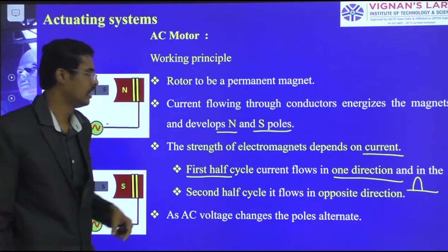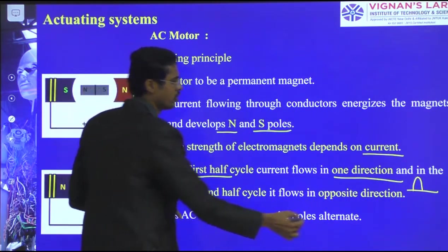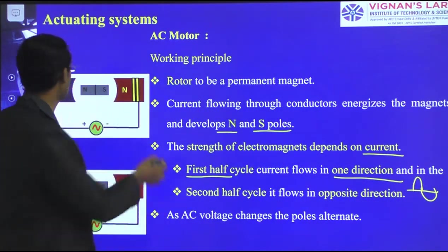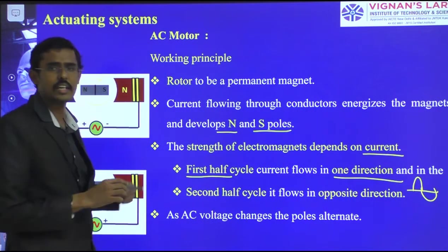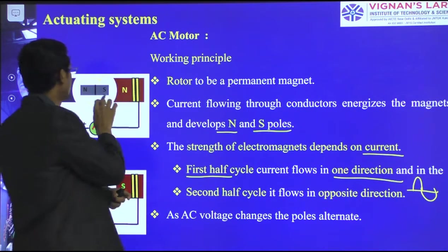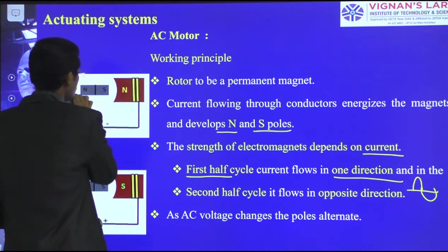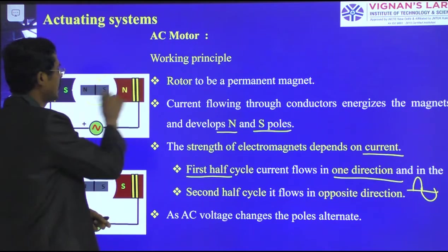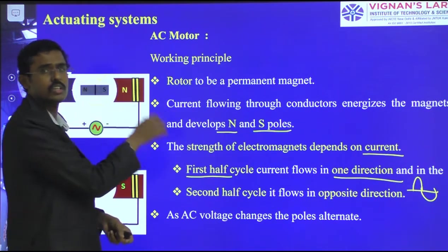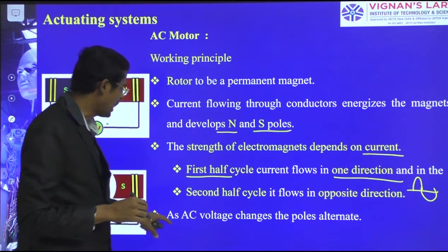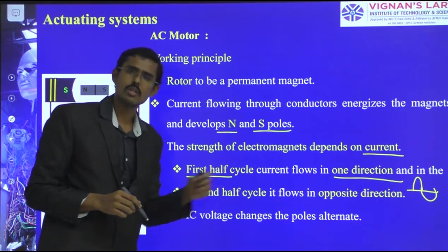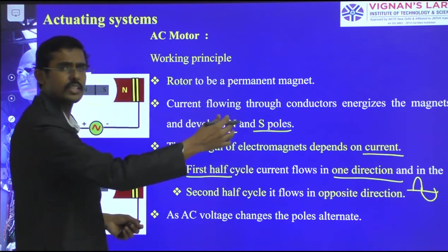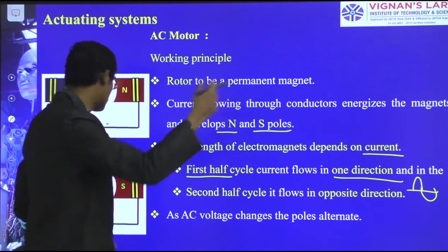In the second half cycle, current flows in the other direction. The alternating current keeps rotating — first one pole is activated, then the other, completing the cycle by rotation of the rotor. As an AC motor, the polarity changes alternately, and by these operations the rotor continues to rotate continuously.